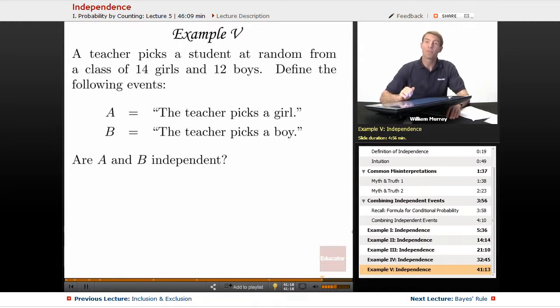In our last example, we have a teacher picking a student at random from a class of 14 girls and 12 boys. So our two events here are A being the event that the teacher picks a girl, and B is the event that the teacher picks a boy. The question is, are A and B independent?